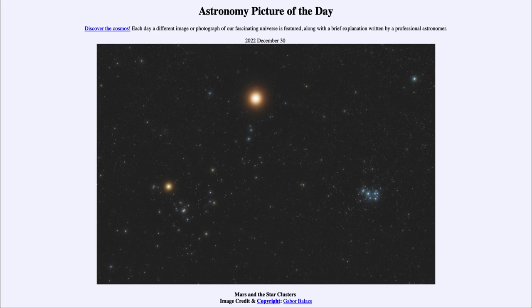Today's picture for December 30th, 2022 is titled Mars and the Star Clusters. What do we see here? The brightest object is the planet Mars, known as the red planet for the distinct red color it shows.